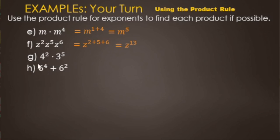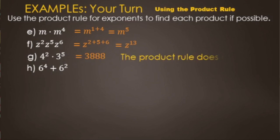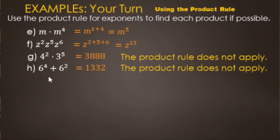Letter G: in this case we do not have the same bases, so the product property does not apply. You can put it in a calculator if you need a value, but you're not using the product rule here. Letter H: we have six to the fourth plus six squared. Again, product property does not apply because this is addition, not multiplication.